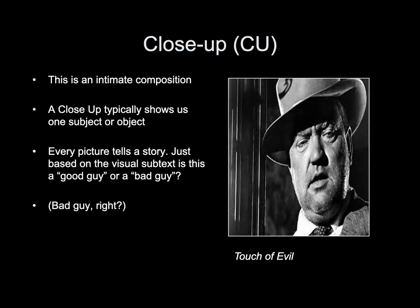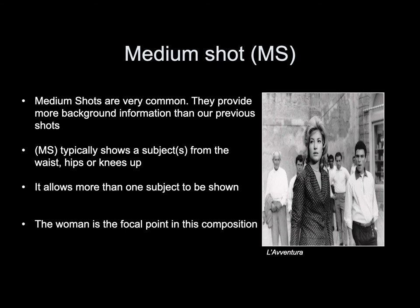A close-up is an intimate composition that typically shows one subject or object. Every picture tells a story — based on the visual subtext, is this a good guy or a bad guy? Bad guy, right? A medium shot is very common and provides more background information than the previous shots. A medium shot typically shows a subject from the waist, hips, or knees up, and allows more than one subject to be shown.